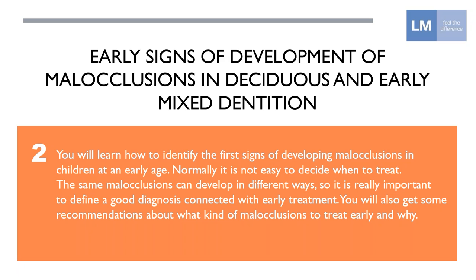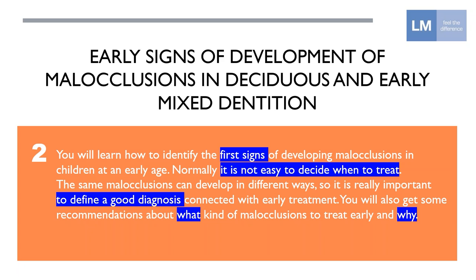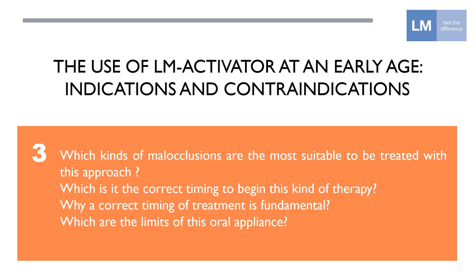Today we will speak about the early signs of development of malocclusion in primary and early mixed dentition. In particular, trying to analyze the first signs, because it is very important to understand what will happen during growth. Normally, it is not so easy to decide what to do and when to treat. At the end, we will see that it is really very important to be able to define a good diagnosis. I will speak today about why we can treat early and when we can treat early. In the next appointments, we will speak about the way of treatment.